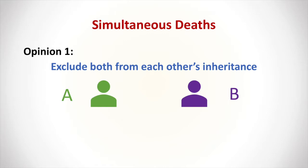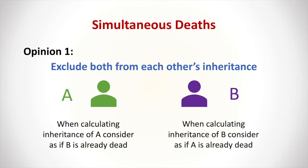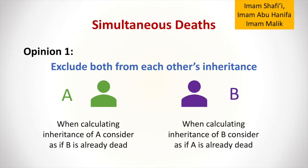This is taking into account the rule that a person only inherits if they were alive at the time of the death of the deceased. So while calculating the inheritance of person A, we consider as if B is already dead — B would not get any share from A. Similarly, when we calculate the inheritance for B, we consider as if A is already dead and do not give him any share. This is the majority opinion held by three of the four schools of jurisprudence in Islam.